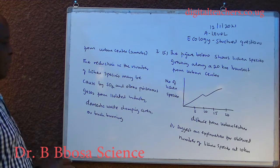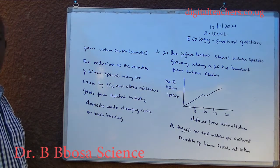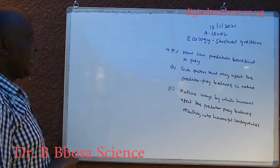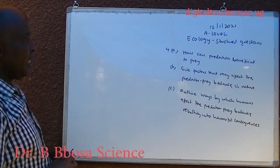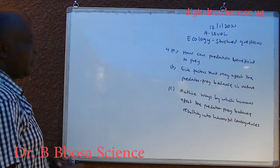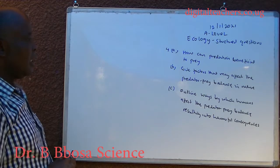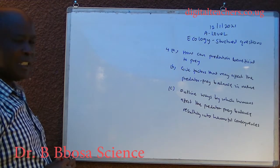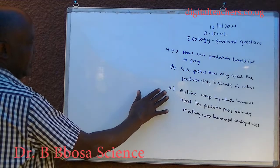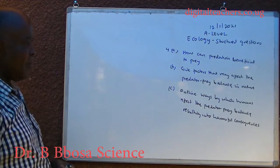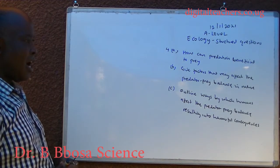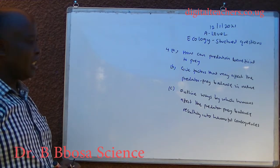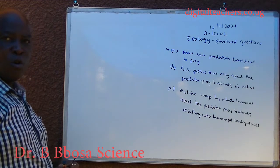Domestic dumping area or bush burning. Number four A. How can predation be beneficial to prey? B. Give factors that may affect predator-prey balance in nature. C. Outline ways by which humans affect the predator-prey balance resulting in harmful consequences.